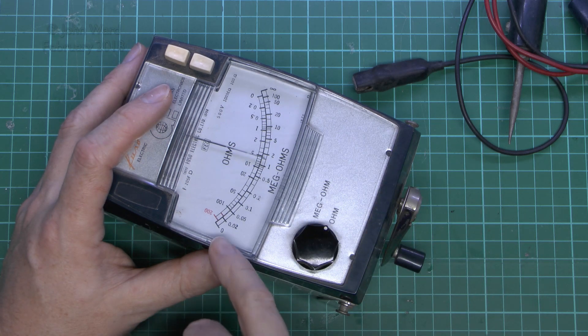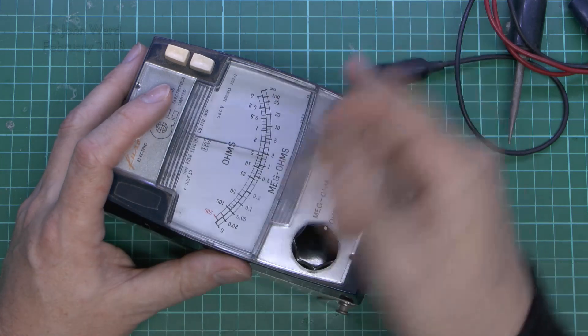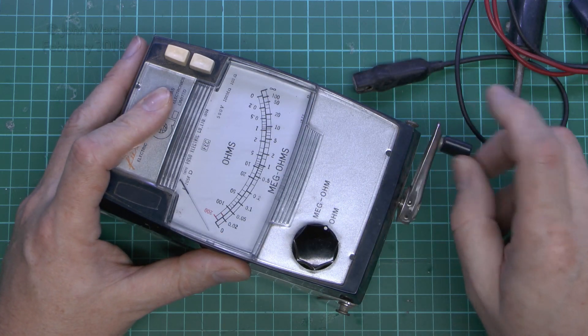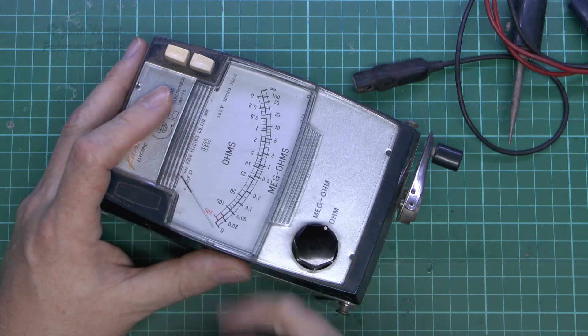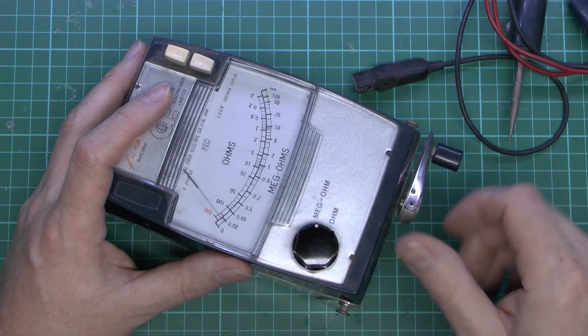And on the ohms scale it should go to this end, because it's sort of in the reverse direction, and again there's nothing connected, so it should have basically greater than that. And you can see in that case that it does, so at least it's partially working. So obviously the megaohms part is not.